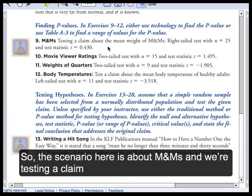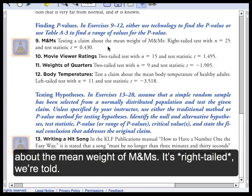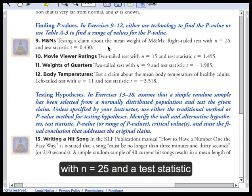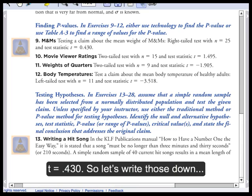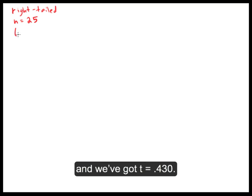The scenario is about M&Ms, and we're testing a claim about the mean weight of M&Ms. It's a right-tailed test with n equals 25 and a test statistic t equals 0.430. So let's write those things down: right-tailed, n equals 25, and t equals 0.430.